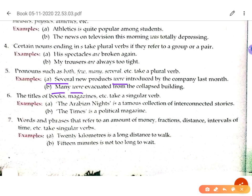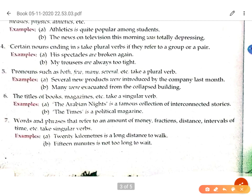The next rule: the titles of books, magazines, newspapers, etc. take a singular verb. For example: 'The Arabian Nights is a famous collection of interconnected stories.' Another example: 'The Times is a political magazine.' Whenever a title appears in a sentence, make sure it takes a singular verb and not a plural verb.